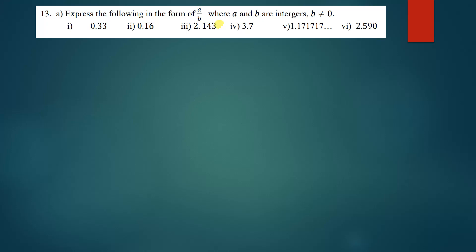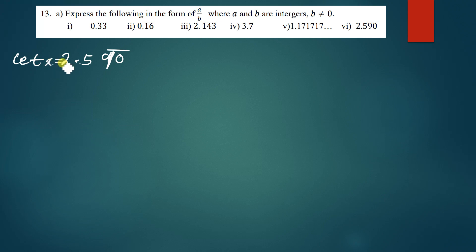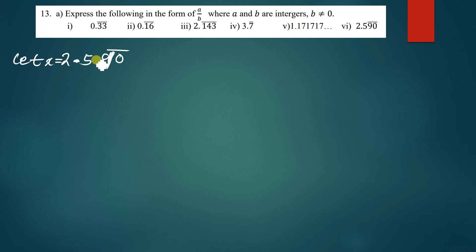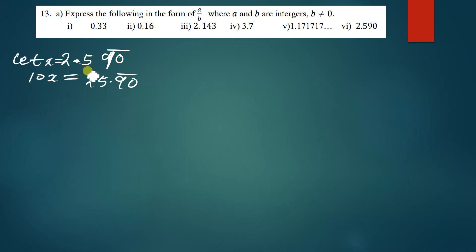For 2.590̄ — where 90 is repeating — follow the same procedure. Let x = 2.590̄. First, move the decimal point closer to the repeating digits. The point moves one place, so multiply the equation by 10: 10x = 25.90̄.